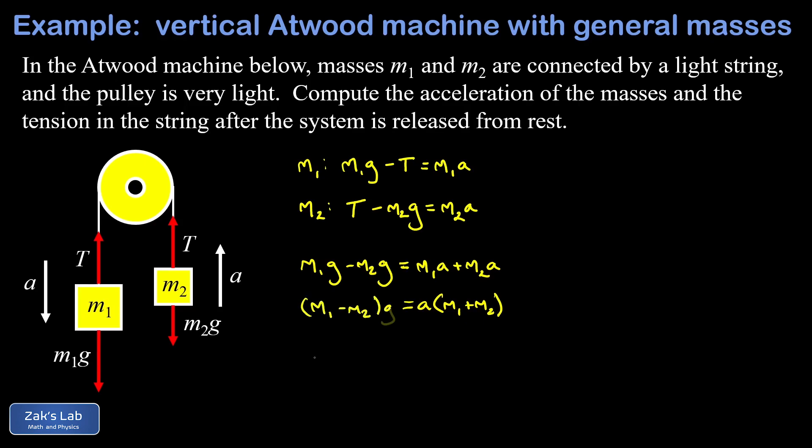Now we can solve for our acceleration and this result has a really nice symmetry to it. We can write it as m1 minus m2 divided by m1 plus m2 times g. Notice that the units are going to work out nicely here because those mass units cancel in that fraction.